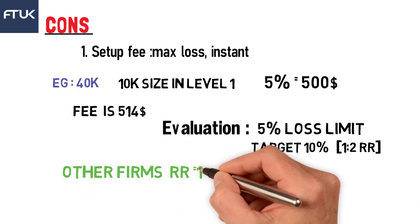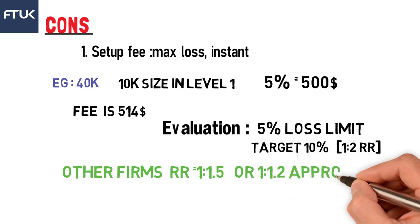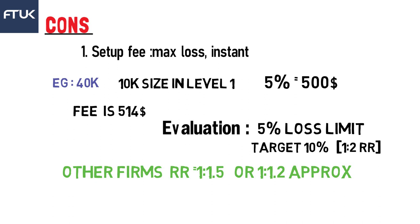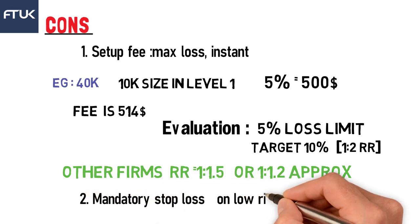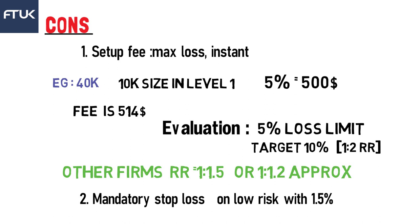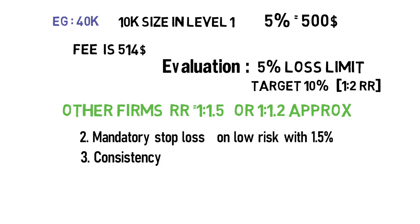The second con is the mandatory stop loss in the Lorix program — you must place a stop loss of no more than 1.5% per trade. The third con is the consistency rule: you cannot drastically increase your risk, and you have to be consistent with your risk pattern. This rule is somewhat open-ended — they haven't given any specific figure or number to exactly define it.